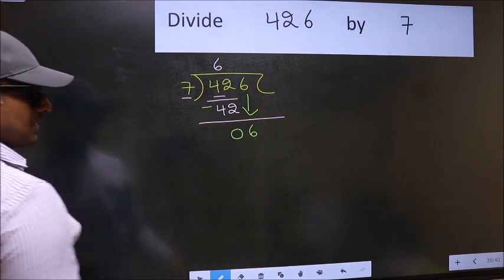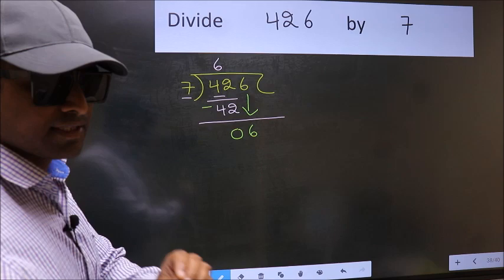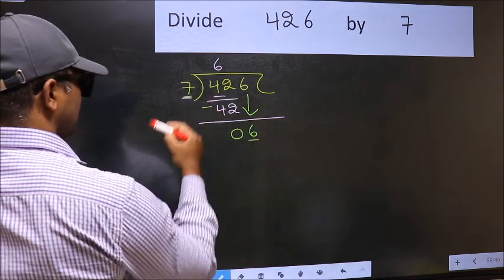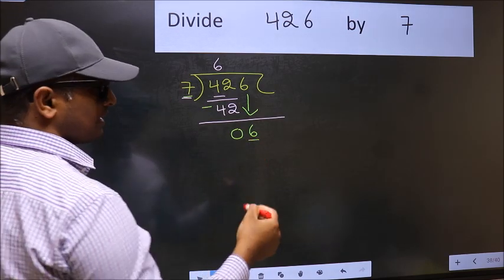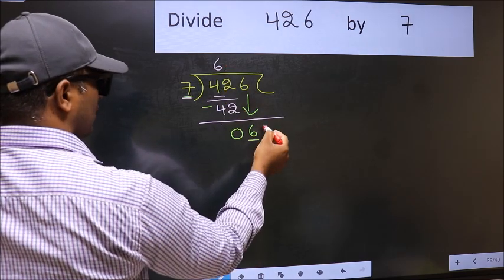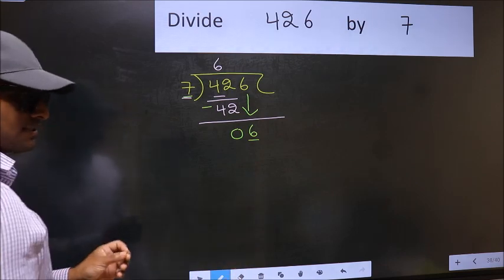After this step, the mistake happens. And the mistake is this. Here we have 6 and here 7. 6 is smaller than 7. So, what many do is they directly put dot and take 0, which is wrong.